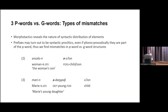Morphotactic distributions of elements can also reveal interesting mismatches. What looks like a possessive prefix in Sora, when seen in a larger structure, is actually a phrasal clitic that attaches to the leftmost member of the modified or possessed noun phrase. Comparing examples two and three, the possessive or dependent marker occurs on the adjective modifying the noun, as opposed to the noun itself.